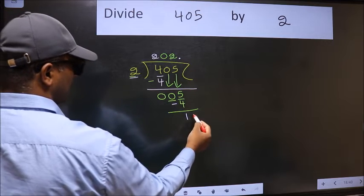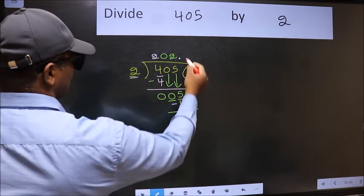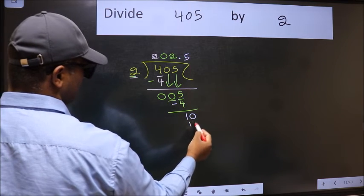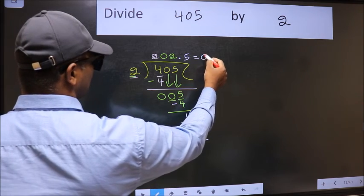So we should put dot and take 0. So 10. When do we get 10 in 2 table? 2 times 5 is 10. Now we should subtract. We get 0. So this is our quotient.